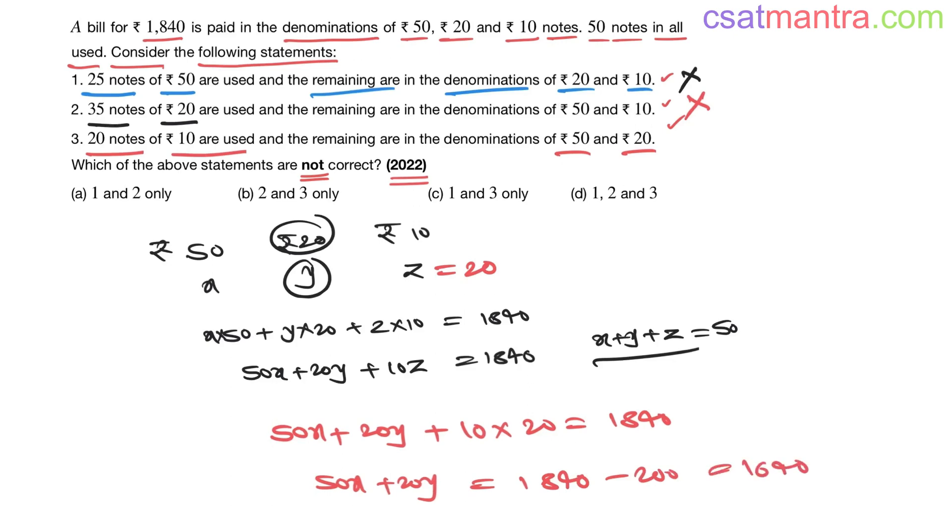So 50x + 20y = 1840 - 200 = 1640. Cancel zero: 5x + 2y = 164. Now x + y + z, z is 20, equals 50, so x + y = 30.